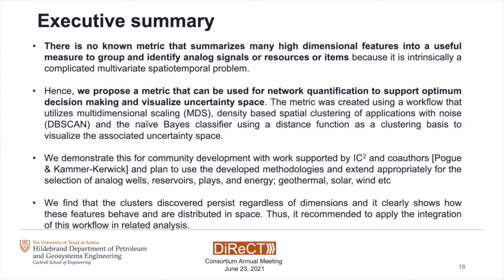There is no norm metric that summarizes many high dimensional features into a useful measure to group and identify analog signals, resources, or items, because it's an intrinsically complicated multi-variate spatial temporal problem. Hence, we propose a metric that can be used for network quantification to support optimum decision making and visualize the uncertainty space. The metric was created using a workflow that utilizes multi-dimensional scaling, density-based clustering, and a Naive Bayes classifier using the distance function as a clustering basis to visualize the associated uncertainty space. For this particular work, we demonstrate this for community development, supported by the IC Square Institute at UT Austin, and plan to extend the methodologies for selection of analog wells, reservoirs, plays, and energy resources such as geothermal, solar, and wind.